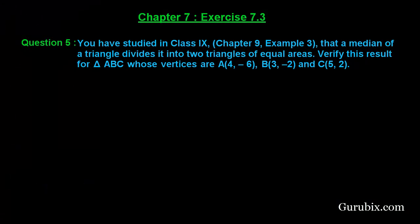Welcome friends. Let us solve question number 5 of Exercise 7.3 of Chapter 7. The question says: you have studied in Class 9, Chapter 9, Example 3 that the median of a triangle divides it into two triangles of equal areas. Verify this result for triangle ABC whose vertices are A(4, -6), B(3, -2), and C(5, 2).